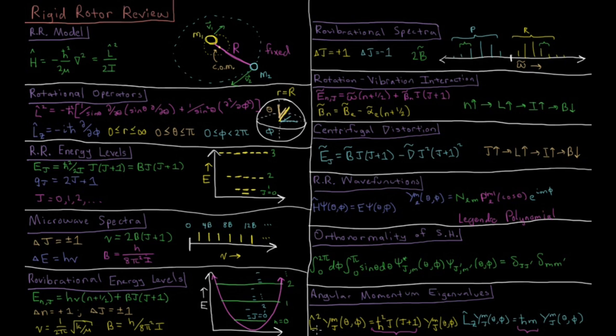If we act on the wave function with the L squared operator, the eigenvalue we get back is H bar squared J times J plus one for J and M here. And for LZ, the Z component of angular momentum acting on a spherical harmonic with J and M, you get the eigenvalue H bar M times the same spherical harmonic back. These two eigenvalues here can distinguish which state we have by acting on LZ and L squared compared on a given spherical harmonic.